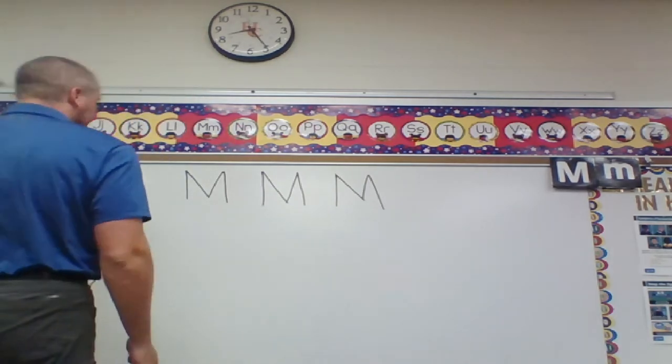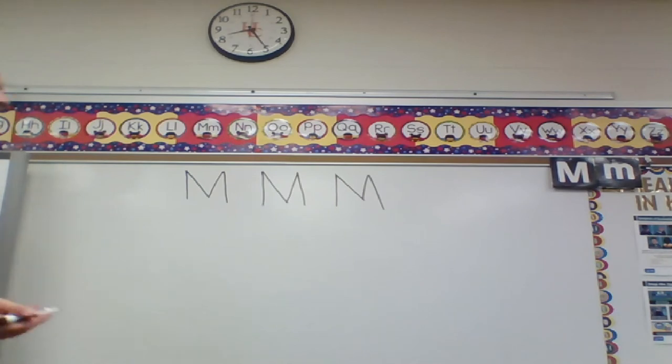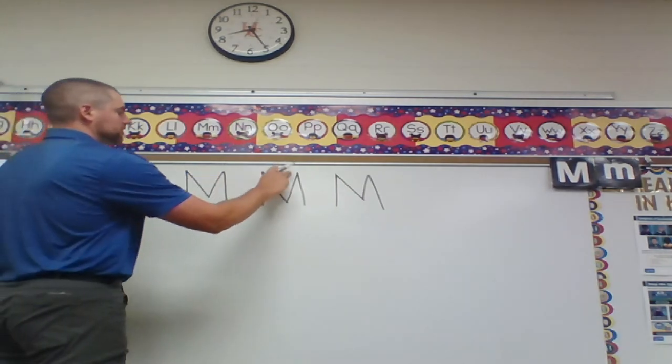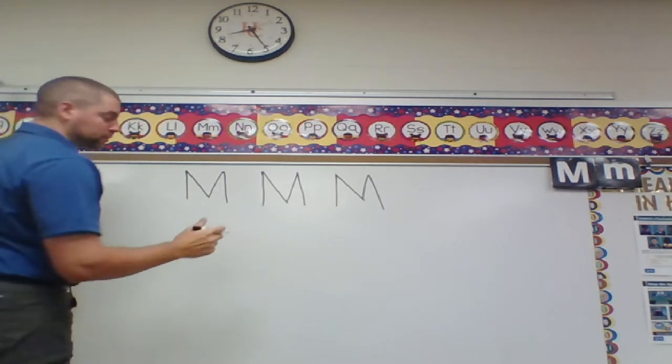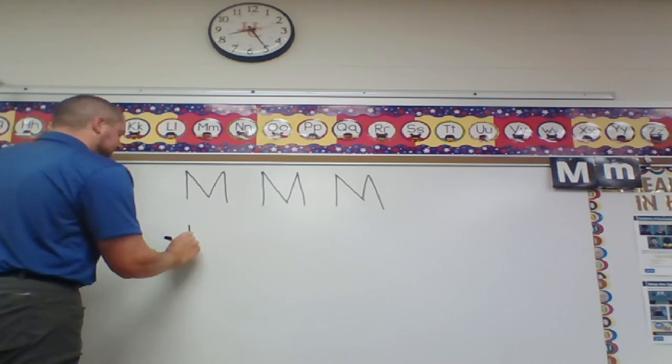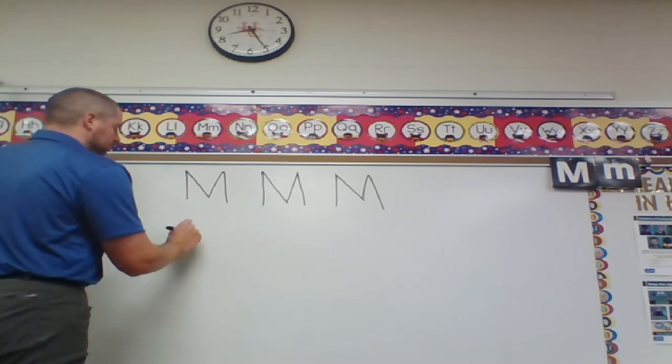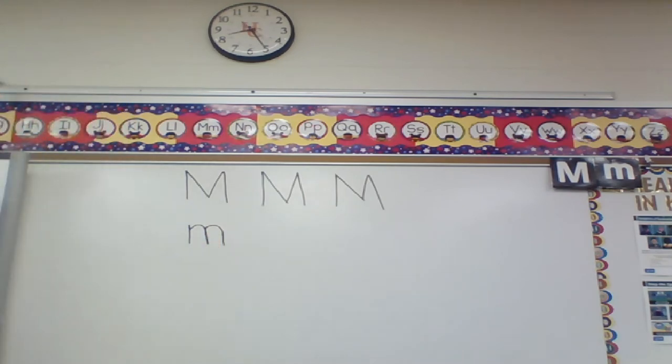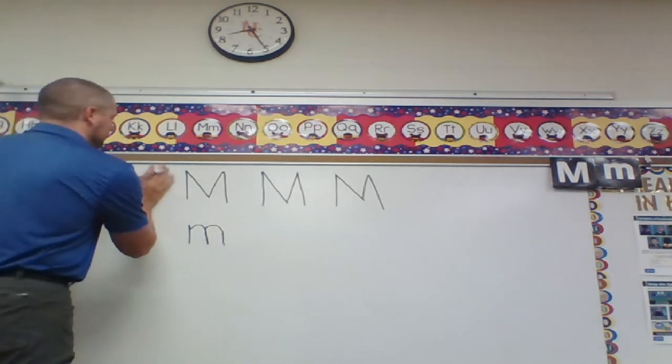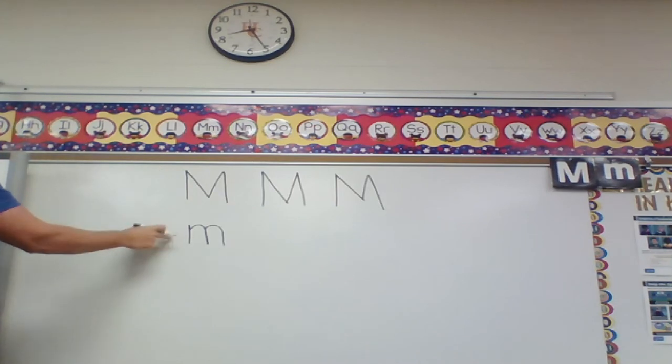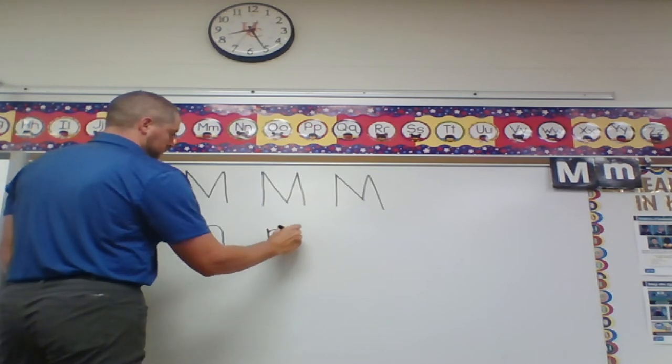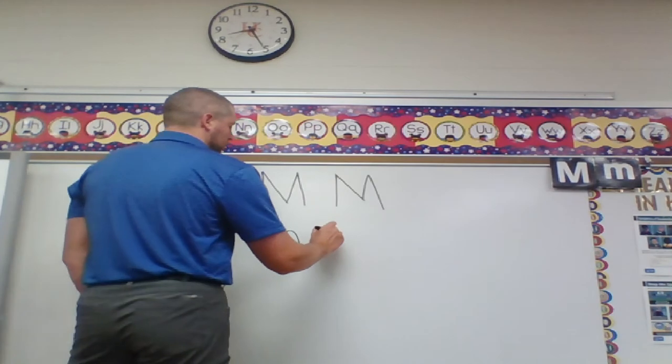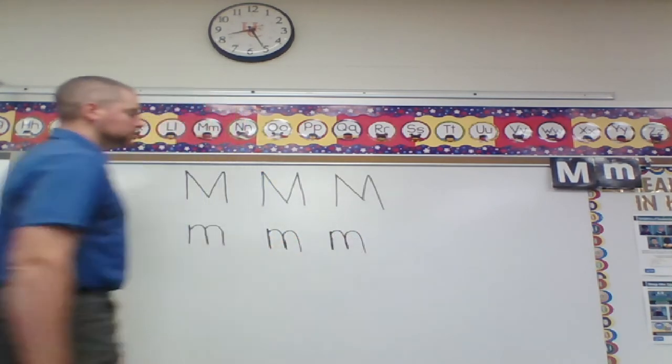Now, our lowercase m has a similar shape, but it doesn't have these pointy parts at the top, and it's not as tall. So, with our lowercase m, we're going to start in the middle. We're going to make a line down from the middle to the bottom and pick up. And then we make these two, instead of mountains, we're going to make hills to make the shape of our M. So, our capital M looks like mountains. Our lowercase m is smaller and looks like hills. Let me make two more. Good. And one more. Perfect.